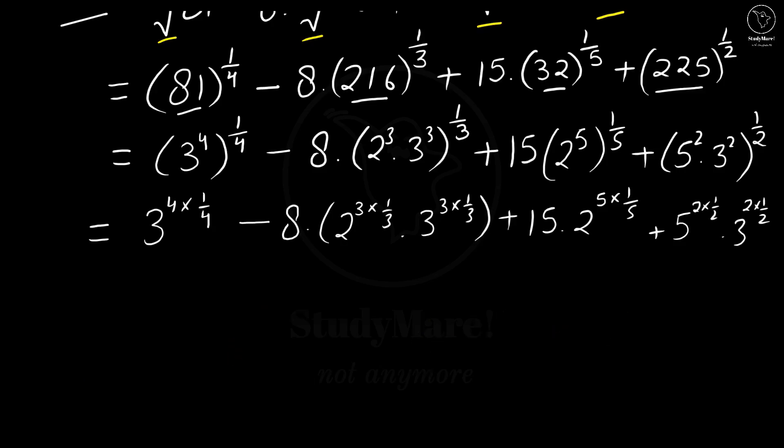Now, it looks simpler and easier. You see here this 4 cancels out this 4. Here this 3 cancels out this 3. Here 3 cancels out 3. Here 5 cancels out 5. Here 2 and 2. Here also 2 and 2, leaving 1 wherever we have this cancellation.